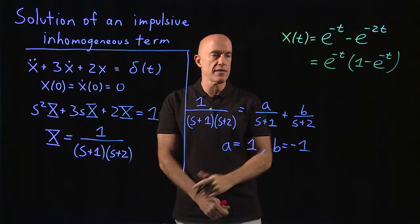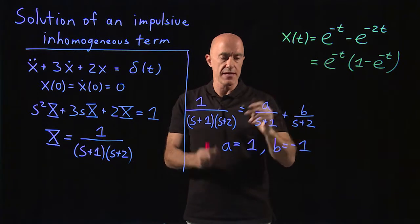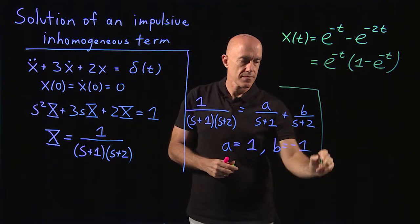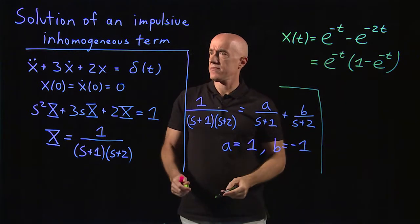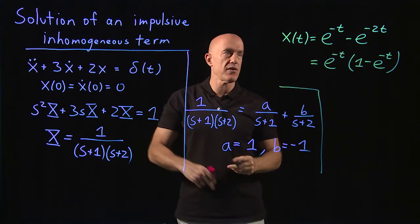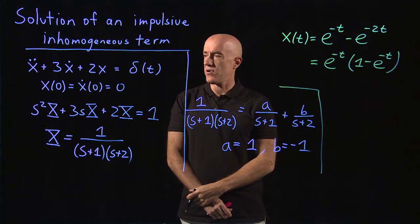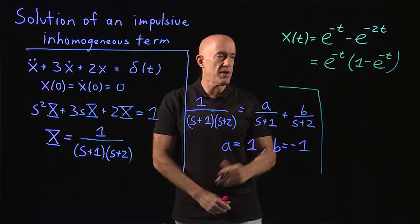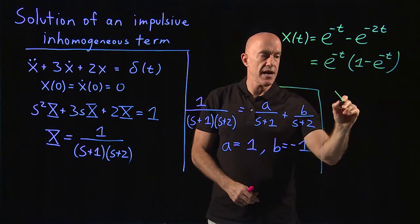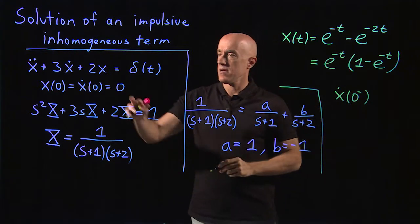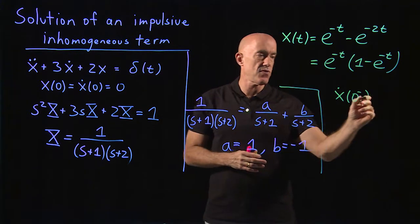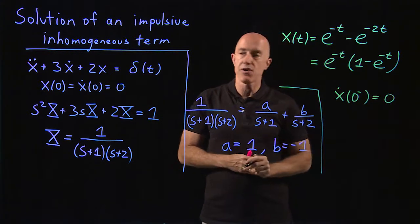There's one point that is worth making here. X of 0 is equal to 0. That's our initial condition. But here, x dot of 0, before the hitting with the impulsive force, is equal to 0.